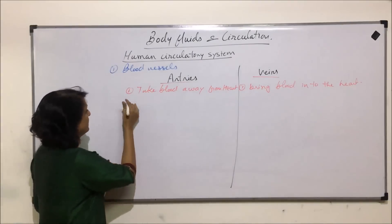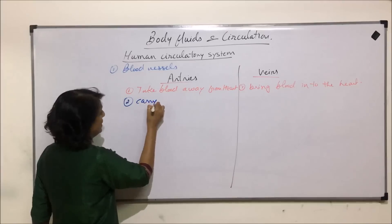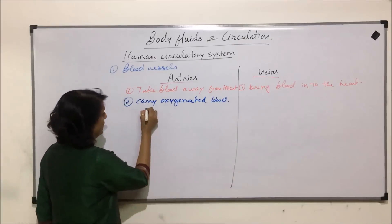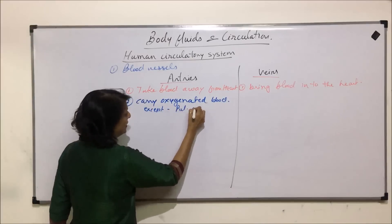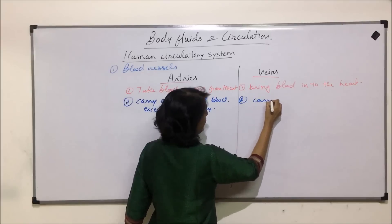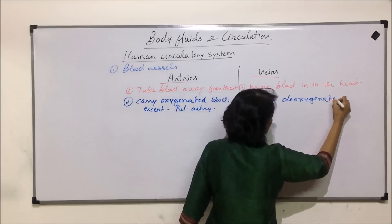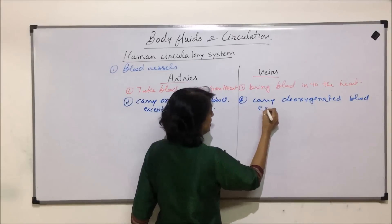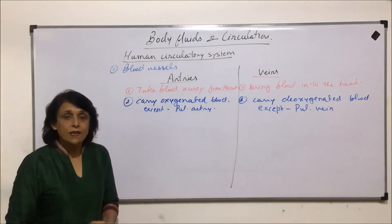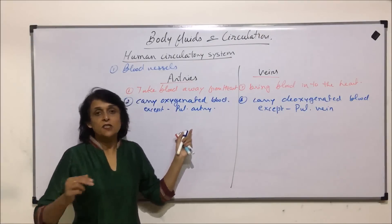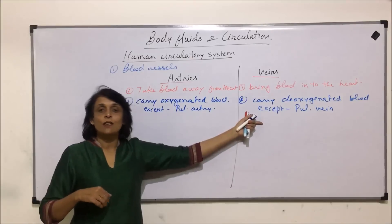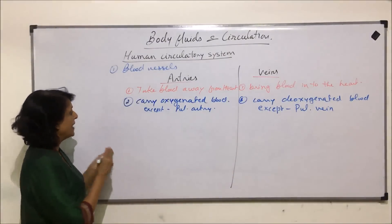The next comparison is which type of blood do they carry. Arteries carry oxygenated blood, but there is an exception — except the pulmonary artery. Veins carry deoxygenated blood, and here also there is an exception — the pulmonary vein. When we see the structure of the heart, we will realize that the pulmonary artery takes blood away from the heart but the blood going through it is deoxygenated, and the pulmonary vein bringing blood into the heart is bringing oxygenated blood.